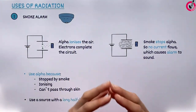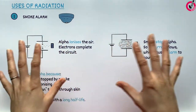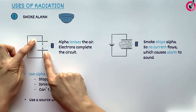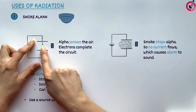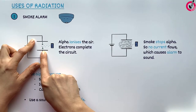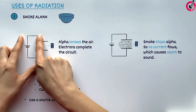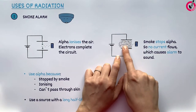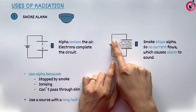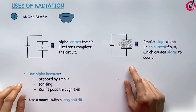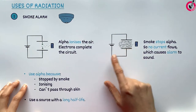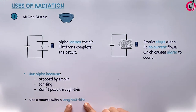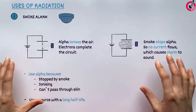In an exam, you might be asked about which type of radiation might be used in a particular situation and why. Here are three common examples. First of all, smoke alarms. Inside smoke alarms are circuits with a gap. Alpha particles emitted from a nearby source ionise the air — in other words, knock the electrons out of the air particles. These electrons then flow across the gap, completing the circuit. If smoke enters the alarm, the alpha particles are stopped, so they don't ionise the air and there's no flow of electrons. A sensor in the circuit detects that there is no longer a current and sounds an alarm. Alpha particles are used because they are stopped by smoke, are highly ionising, and can't pass through skin, so are less hazardous to have in our homes. We would use a source with a long half-life so the alarm keeps working over a longer time without needing to be replaced.